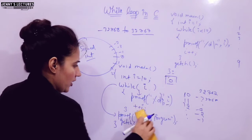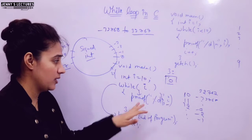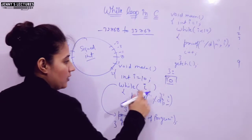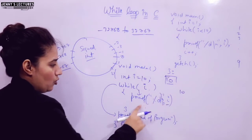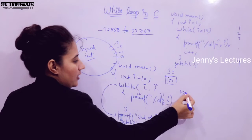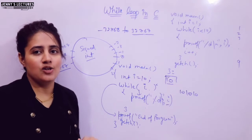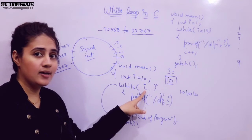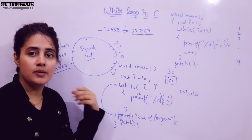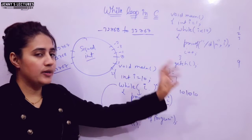Now suppose you don't write the modify expression — no `i++` inside the loop. `i` is 10, condition `while(i)` is true, 10 is printed. But since there is no increment, `i` remains 10 forever. 10 is always non-zero, always true, so it becomes an infinite loop printing 10 infinitely.